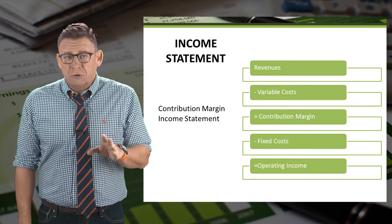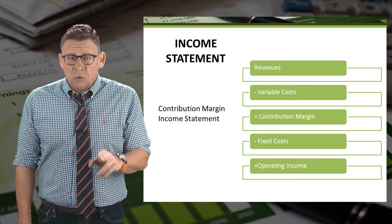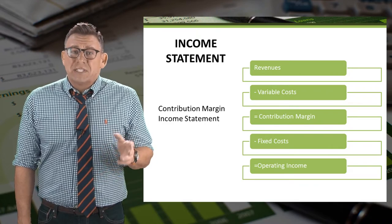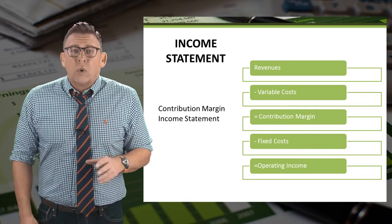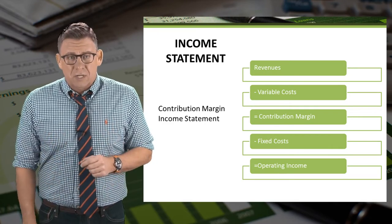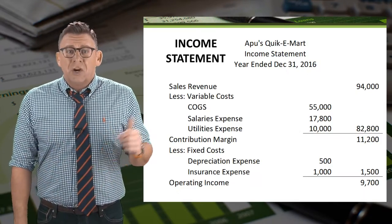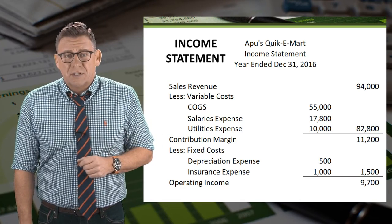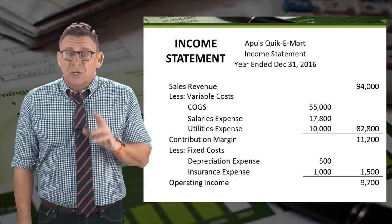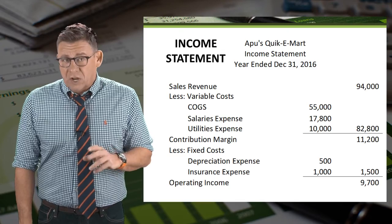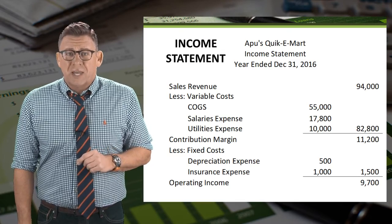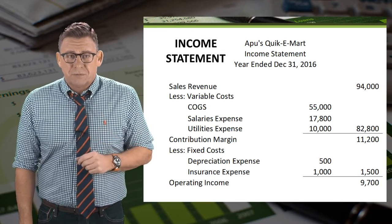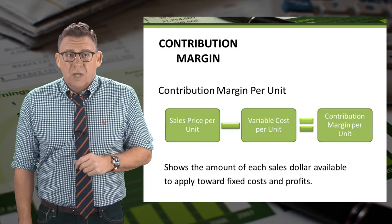When contribution margin equals fixed costs, operating income is zero. We call this term break even. Here is an example of the contribution margin income statement. Let's learn how to use the information on the contribution margin income statement to make business decisions.